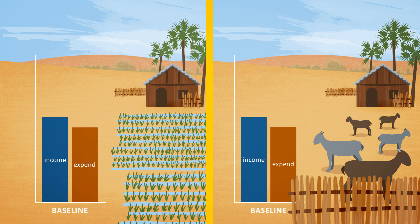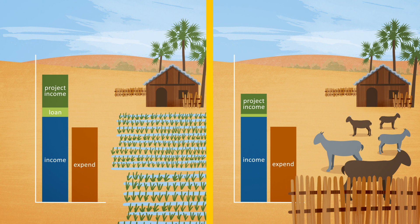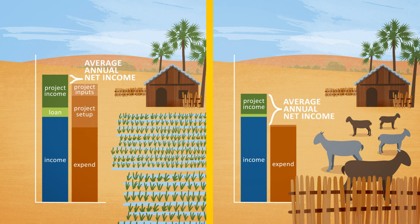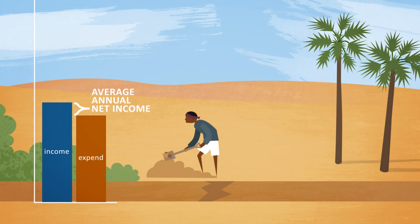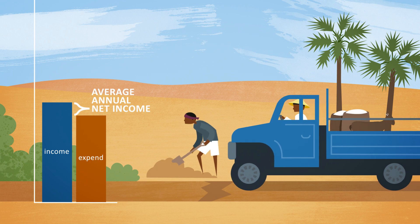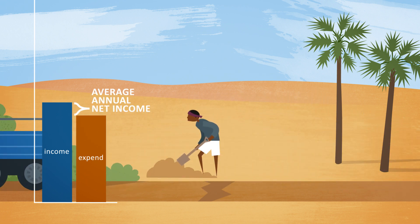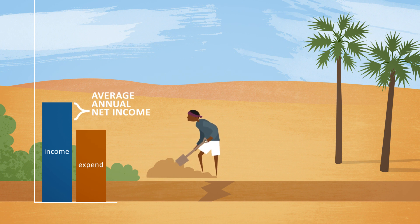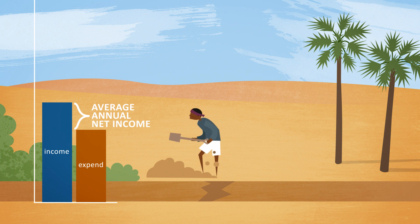We perform the same analysis for each project. The rice and goat projects increase income from these sources respectively, as well as necessitating additional expenditure — for example, on the water needed to irrigate the extra rice. The staple food project works differently: it doesn't affect household income, but instead involves supporting traders to improve the rice supply chain. This reduces the rice price, meaning that households don't need to spend as much on staple food. In other words, by decreasing household expenditure, the project increases net income.